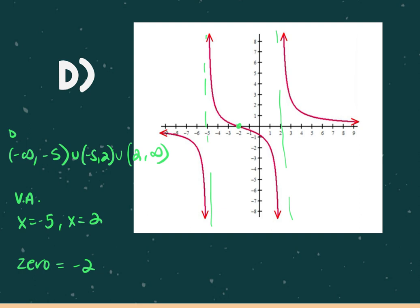Domain only stops and starts with the vertical asymptotes or with holes, which we'll get to tomorrow.